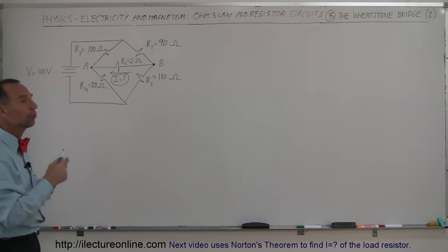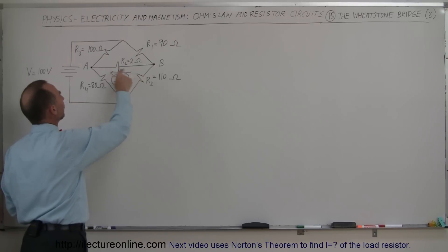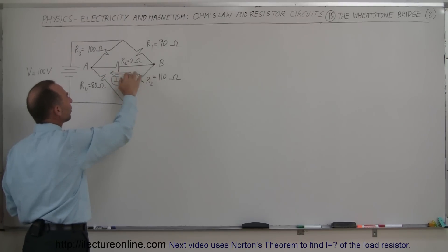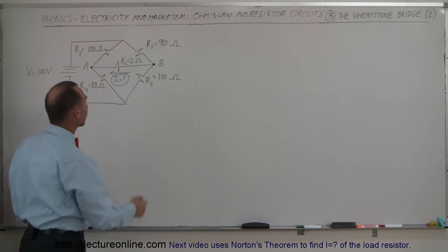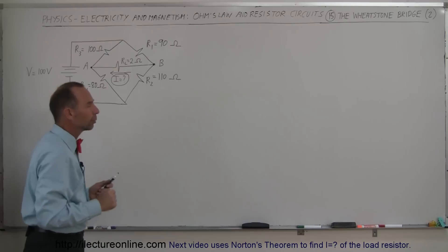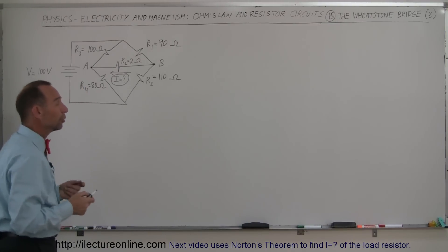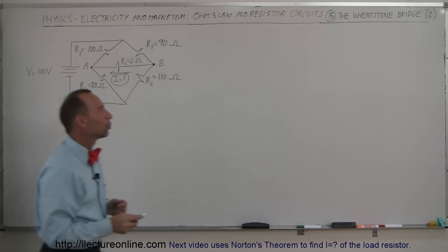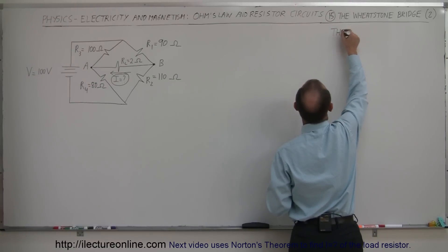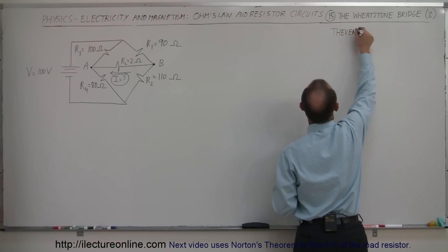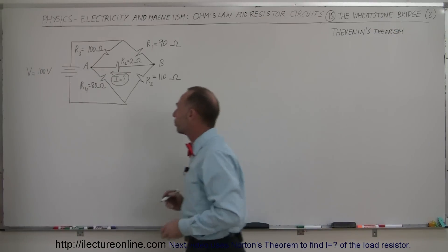But in this case, we're going to do something different. We have four known resistors, and therefore, if the voltage between A and B is not equal, there will be some current on that resistor — we'll call that the load resistor — and we're trying to find out what that current is equal to. We're going to use Thevenin's Theorem to solve that and figure out the current across that load resistor.